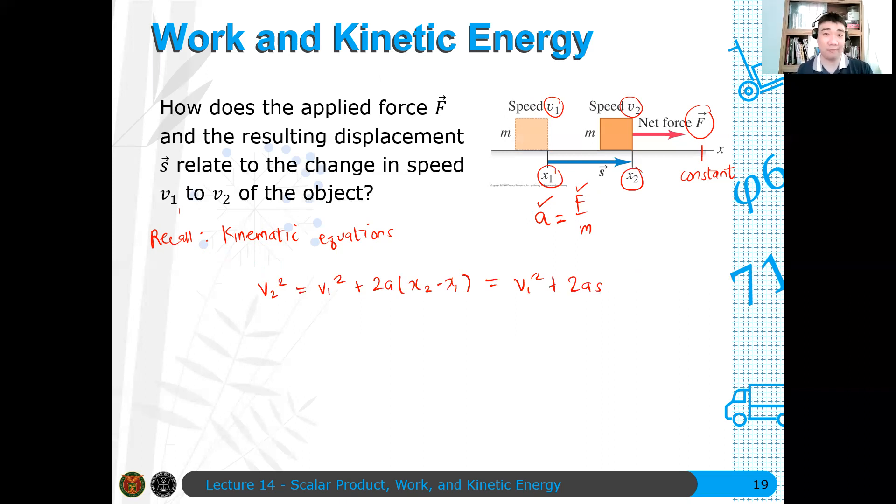Now again, the acceleration is dependent on the force. So I can write this as v2 squared minus v1 squared equals 2 quantity f over m quantity s. Now I can multiply both sides by m over 2, and then I get something like 1 half m v2 squared minus 1 half m v1 squared equals cancel to, cancel m, I get an fs. But what is fs?